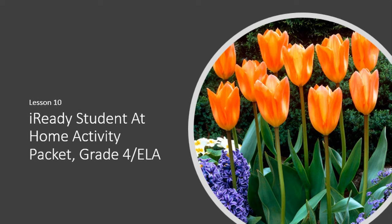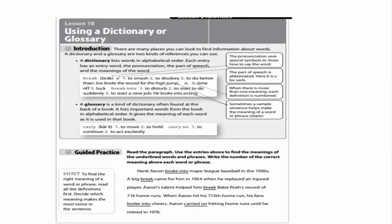Hi, and welcome back for Lesson 10 of our iReady Student at Home Activity Packet, Grade 4. Today, we are working on using a dictionary or a glossary. There are many places you can look to find information about words. A dictionary is a list of words in alphabetical order. Each entry has an entry word, a pronunciation, a part of speech, and the meaning of the words. Let's look at this dictionary entry for the word break.